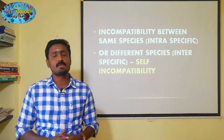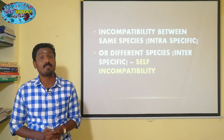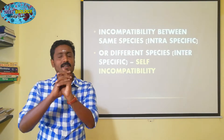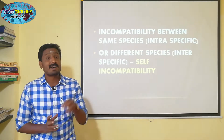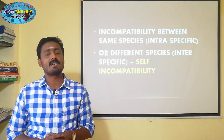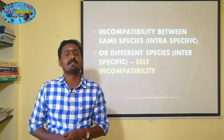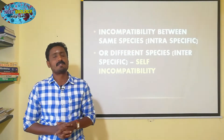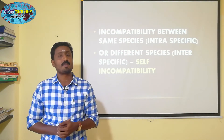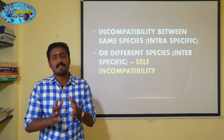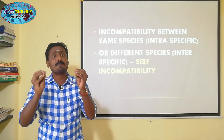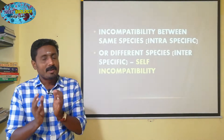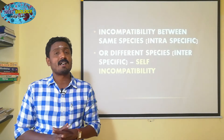Self-incompatibility — if a pollen grain falls onto the stigma of a different species, the pollen tube will not be produced. It is incompatible. Incompatibility occurs between different species.